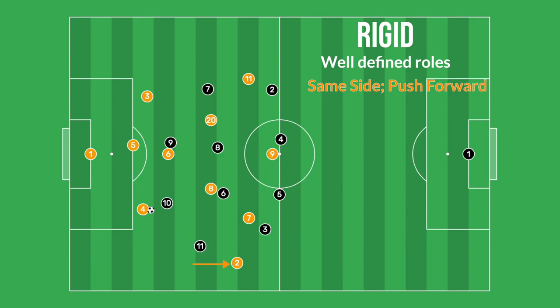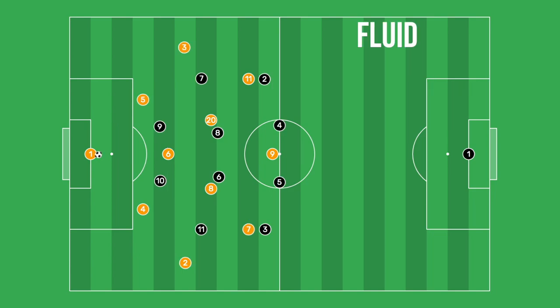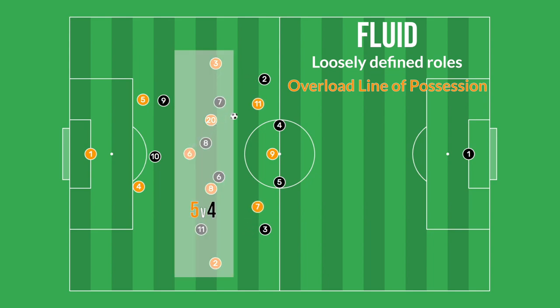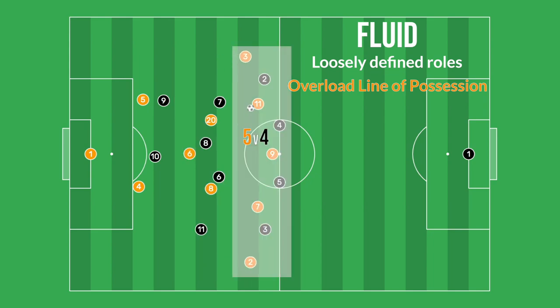These are very direct instructions that tell the fullback how to act in a given situation. On the other end of the spectrum, a fluid structure would mean that the coach only gives a loose definition of the roles for the players. Taking the same 4-3-3 fullback example, a coach implementing a more fluid structure might tell the fullbacks to force an overload on whichever line has possession of the ball. So if the ball is with the center backs and the opposition has two pressing forwards, one fullback will provide a 3-on-2 overload while the other can push forward. This concept would apply to the midfield and forward lines as well, and the coach doesn't say where or how to make an overload, leaving the implementation up to the players.